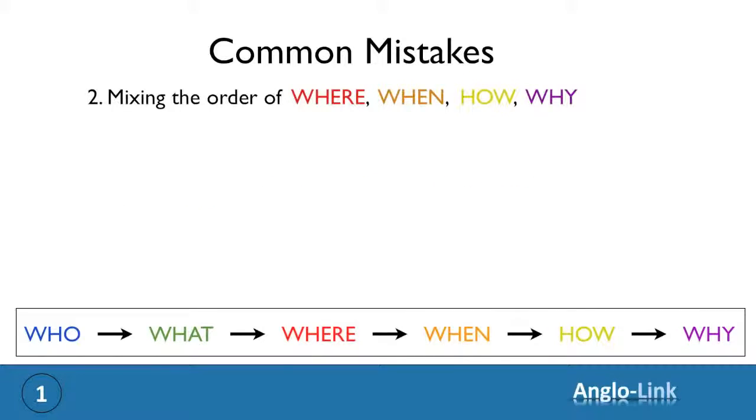Let's look at another example. He goes by train to work. Once again, the where and the how have been switched. The correct order is, he goes to work by train.